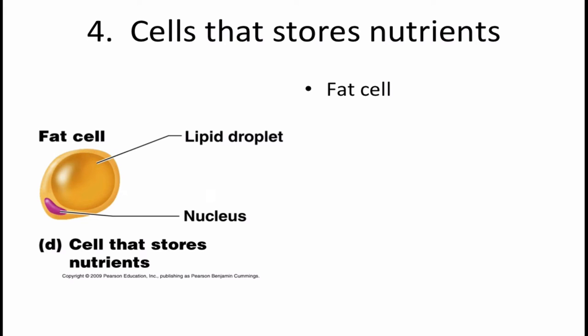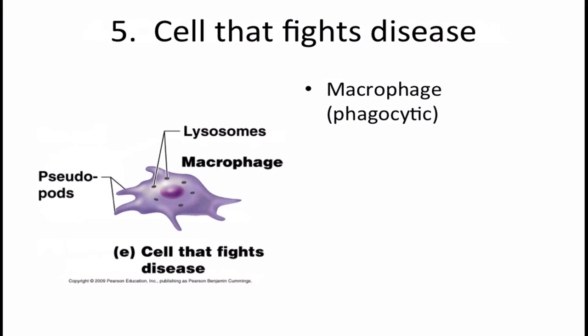Then we have cells that store nutrients — these are fat cells. Lipids are fat and they have a small nucleus. Next are the cells that fight diseases — these are macrophages. They contain lysosomes and have pseudopods, which are false feet that enable them to move around and attack or fight diseases. These are sometimes called 'ninja cells' because they move stealthily between other cells digesting any type of pathogen.